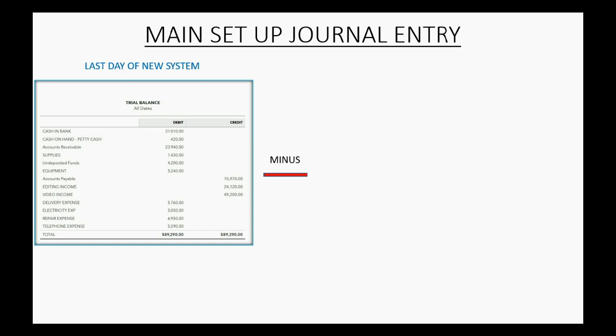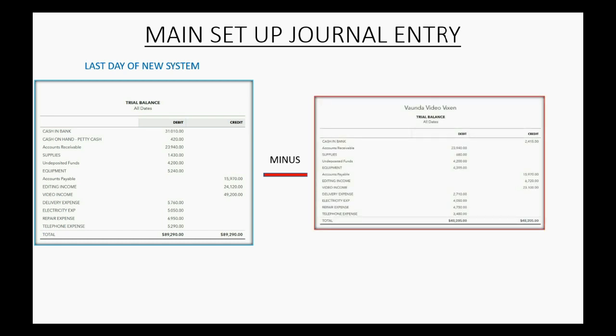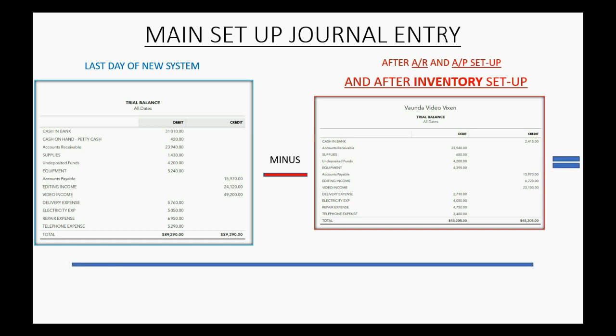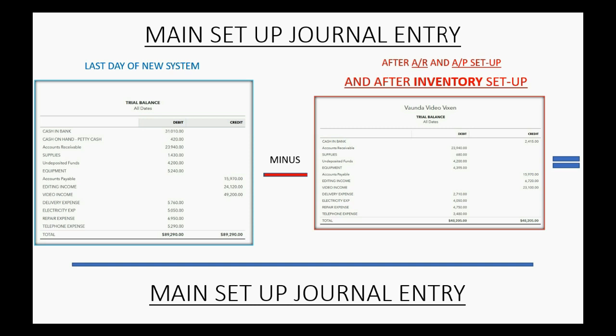The grand finale when we finish is the main setup journal entry, which will be the numbers on the last day of the old system minus the numbers in the new system after accounts receivable, accounts payable, and inventory setup. Those differences equal the amount of the main setup journal entry.